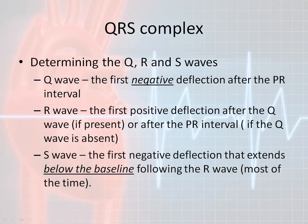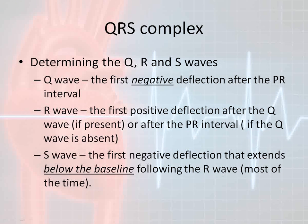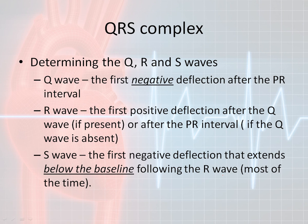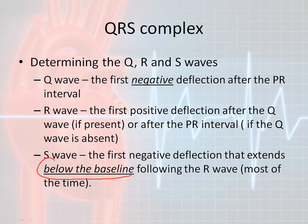Just as a quick reminder about the difference between a Q wave, an R wave, and an S wave: a Q wave is the first negative deflection that occurs after the P wave or the PR segment. An R wave is the first positive deflection after the Q wave, or after the PR interval if the Q wave is absent. The S wave is the first negative deflection that extends below the baseline following the R wave — that is what constitutes a true S wave.